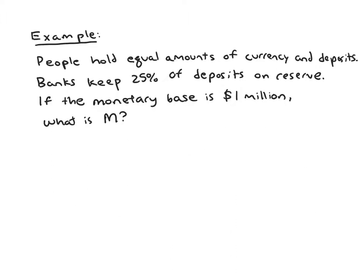So let's put this into action. We'll do an example problem, solve for the money supply using the model. We're told people hold equal amounts of currency and deposits. Banks keep 25% of deposits on reserve. If the monetary base is a million dollars, what is the money supply? The first thing to do when solving a problem like this is we need to bring up our relevant equation. As we had on the previous slide, the money supply is CR plus 1 over CR plus RR times monetary base. We have the monetary base—it's a million. That's the easy part. What's missing in this equation is what are CR and RR.